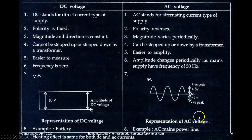So, this is the representation of AC voltage. This is the representation of DC voltage. Example of DC voltage is battery or dry cell. Example of AC voltage is our AC mains power line.